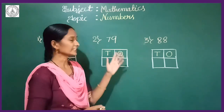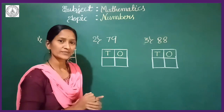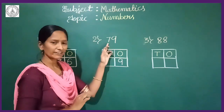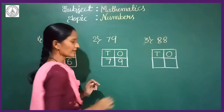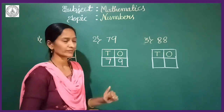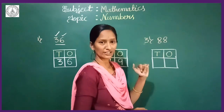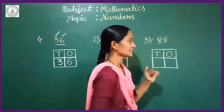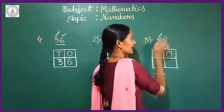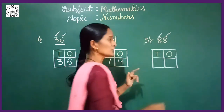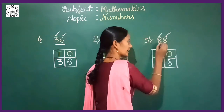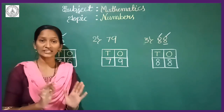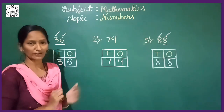Similarly, come to the second one — it is 79. Which number is in 1s place? It is 9, so I am writing 9 in the 1s column. The number 7 is in 10s place, so write 7 here. Now it is 79. Now come to the third one — it is 88. Which number is in 1s place? The first digit 8 is in 10s place; the next digit 8 is in 1s place. So I am writing this 8 in the 1s place, and the other 8 in the 10s place. So now it is 88 — the correct representation in the place of 10s and 1s.